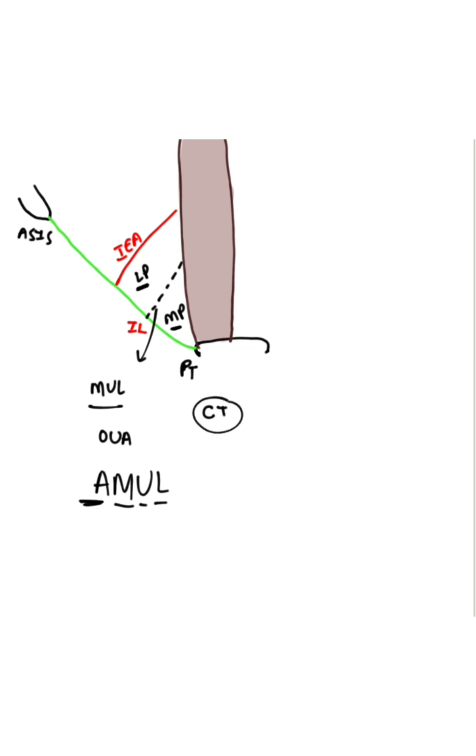Lateral Part of this Triangle is weak. Hence, Direct Hernia usually occurs through Lateral Part of this Triangle.